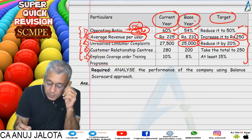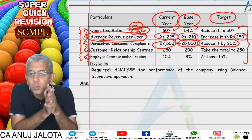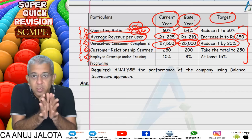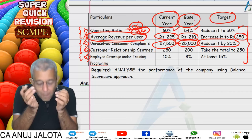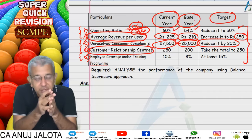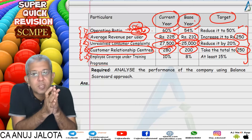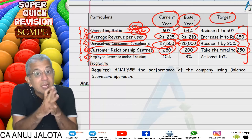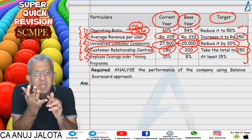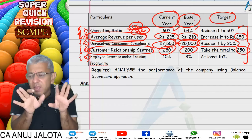Unresolved consumer complaints: last year it was 25, we planned to reduce it by 20%, but instead managed to increase it by 10% — this is really pathetic and will affect the company greatly in the long run. Customers are not happy; try to resolve complaints as soon as possible. To do this, the company thought of opening more customer relationship centers — last year it was 200, target was 250, and we managed to reach 280 — so that's a good job.